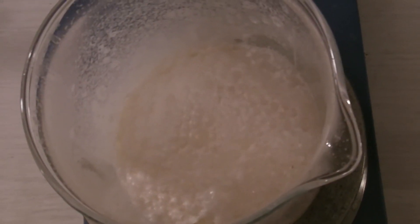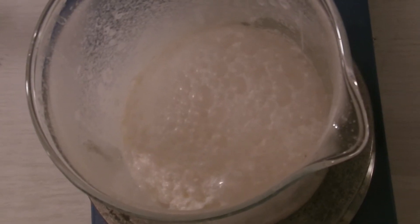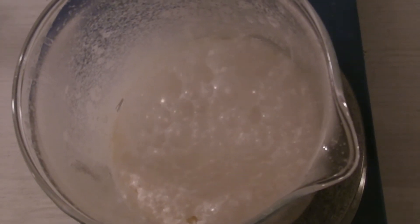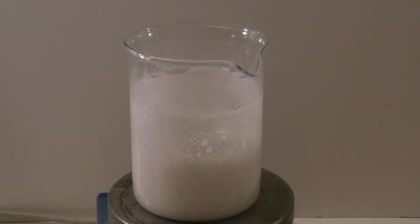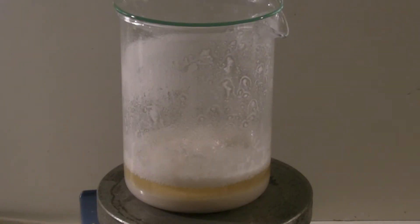In the end the mixture foams a lot so that it can't be stirred anymore. By swirling, the amount of the foam could be decreased. When the foaming was finished, it was cooled down and kept overnight at 4 degrees C.